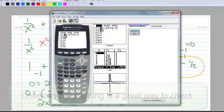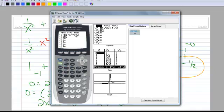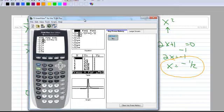So notice I've gone to my y equals. And in y sub 1 I'm going to type in the left-hand side of the equation. 1 divided by x squared plus 1 over x. And then y sub 2 is going to be the right-hand side of my equation.